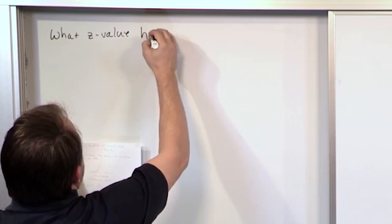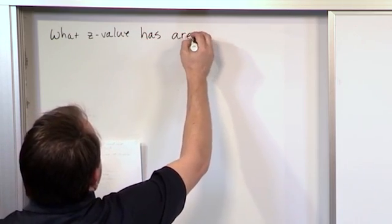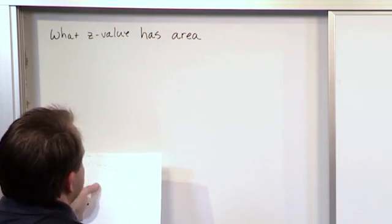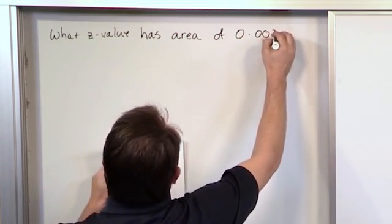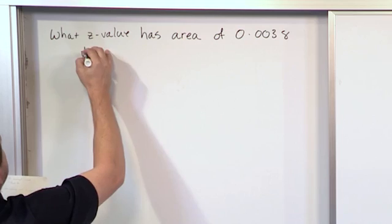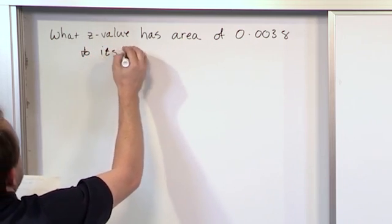What Z value has an area, or you can think of it as a probability, because that's also the same thing, of 0.0038 to its left.